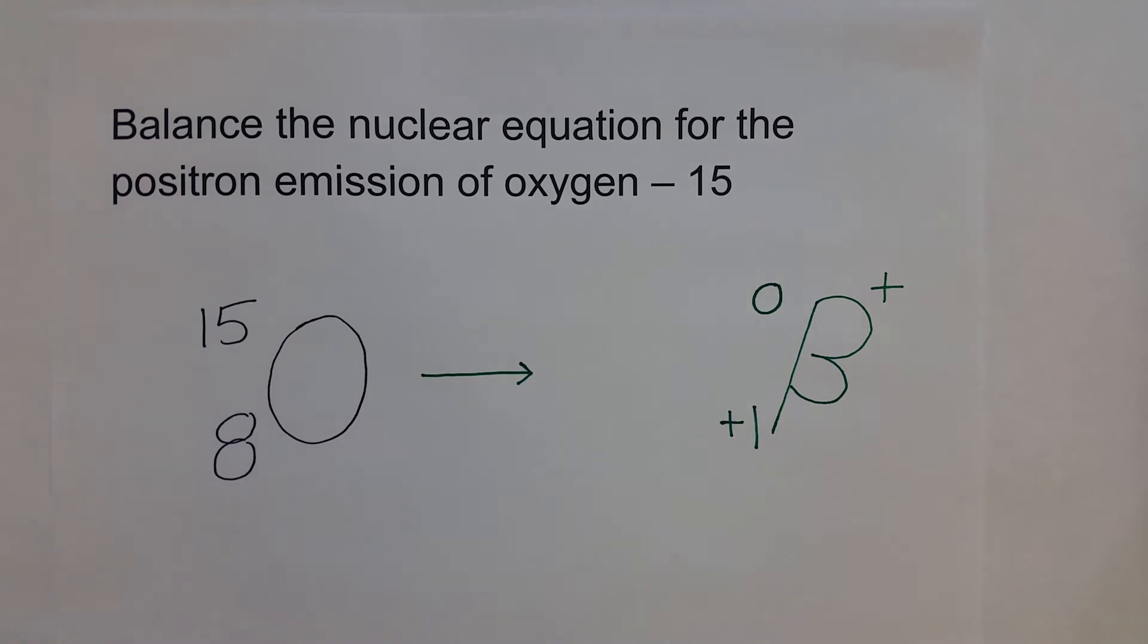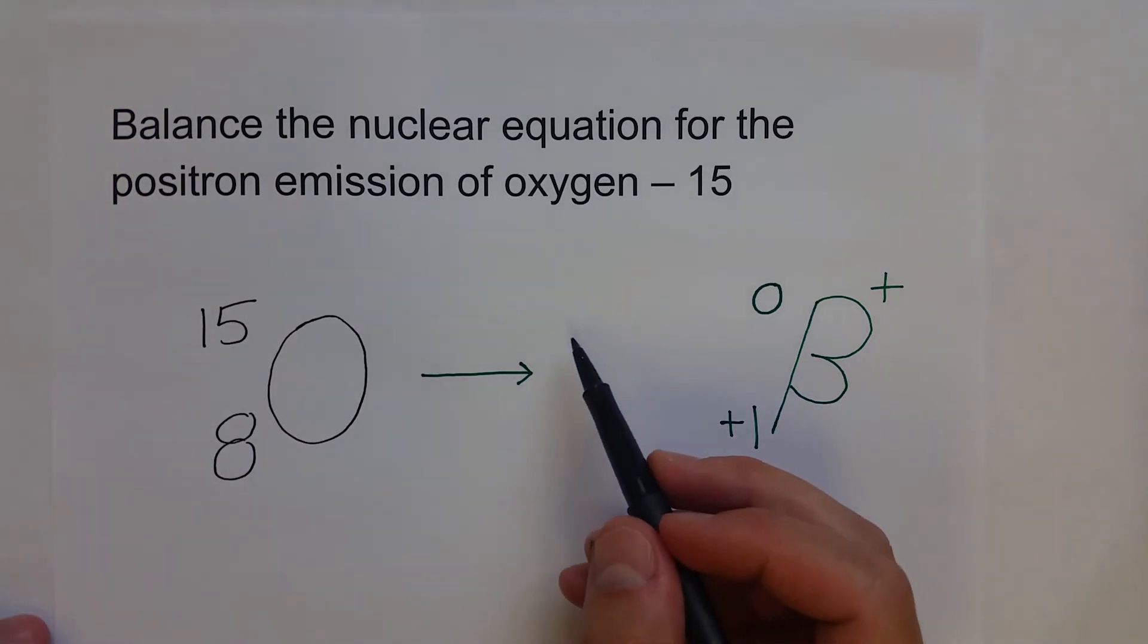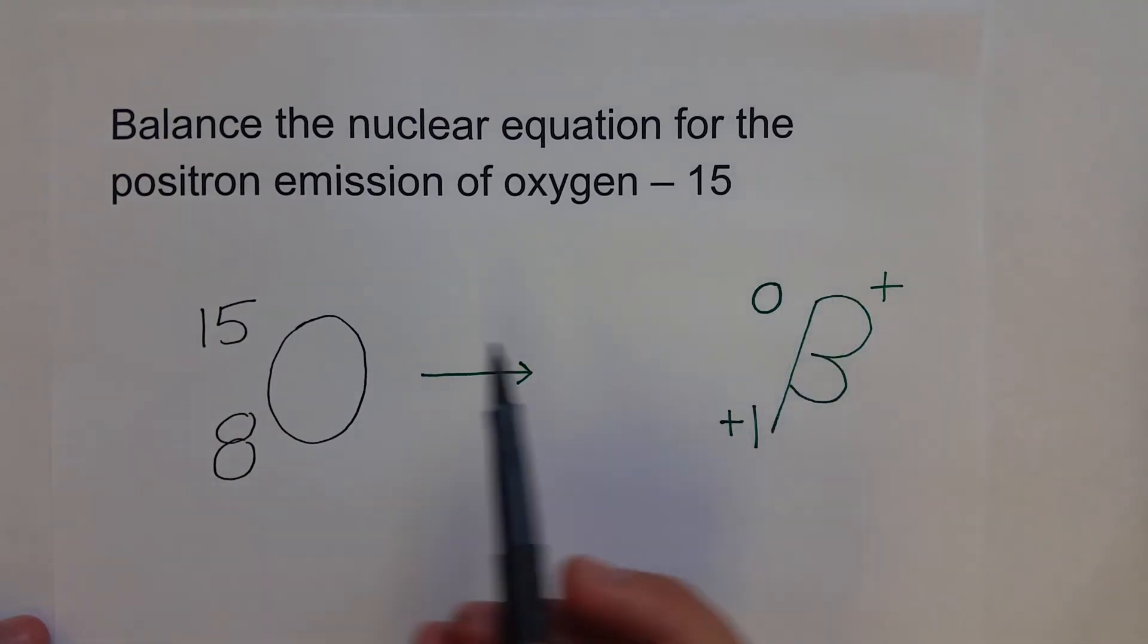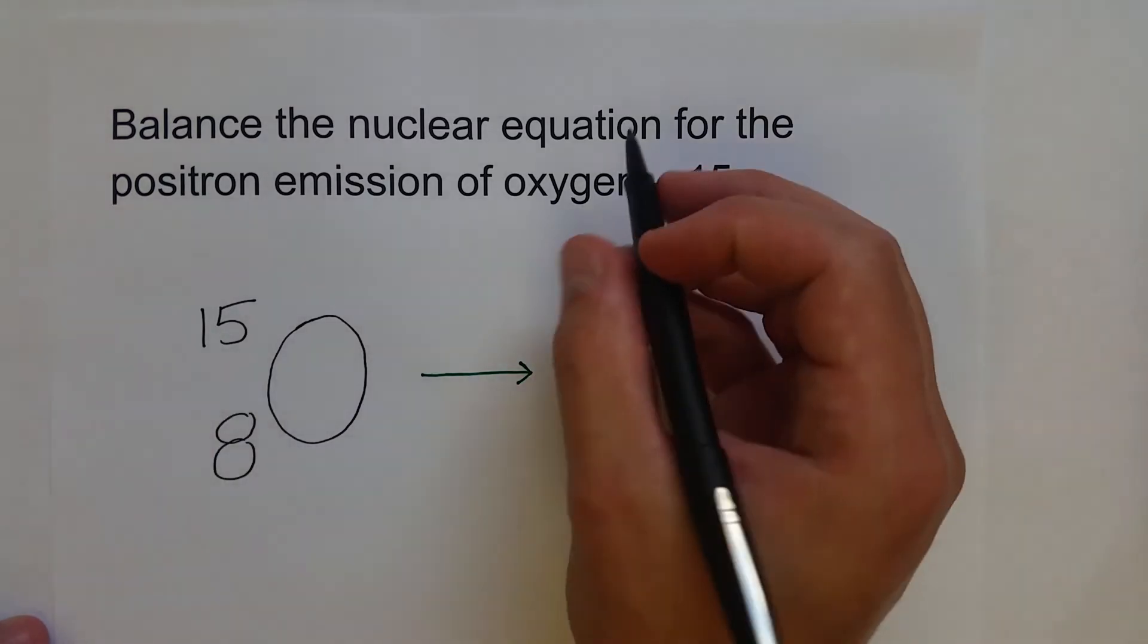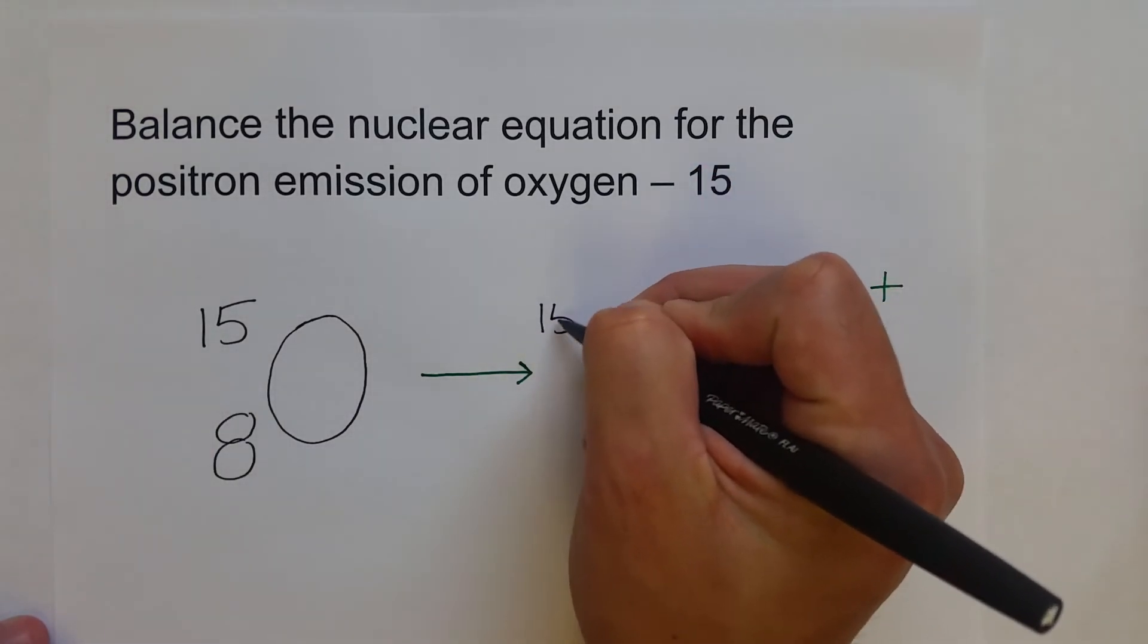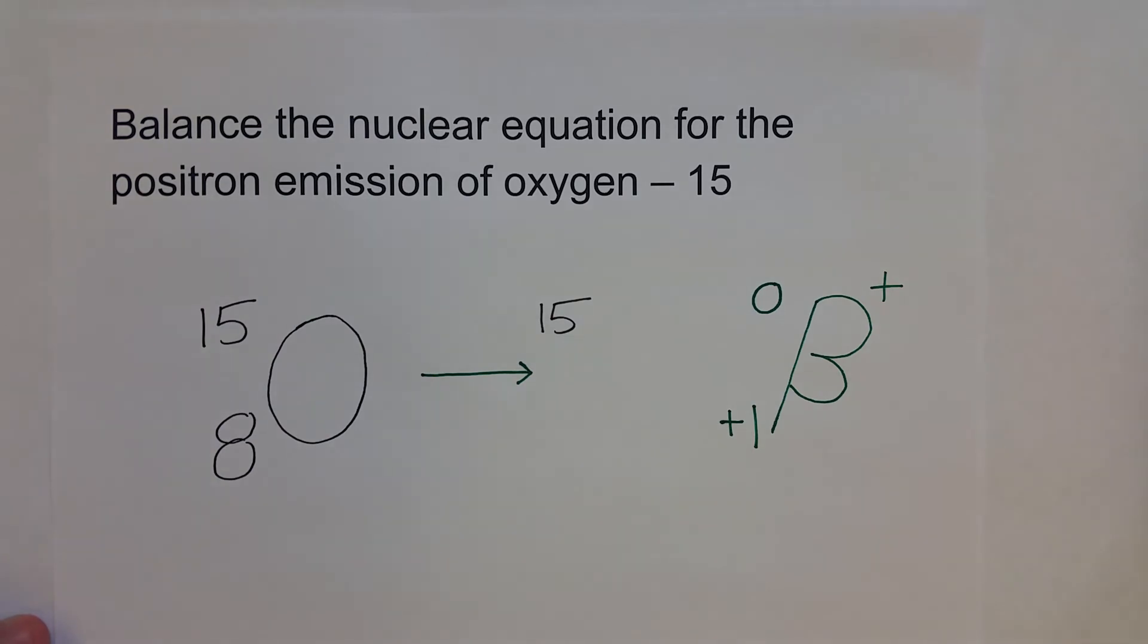Alright, so what's the missing mass number? Well, this is going to be pretty easy because of the zero. 15 plus zero equals 15, so we know that the mass number is also 15 for our isotope.